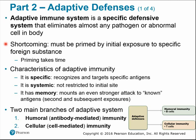A downside to the adaptive system is that it must be primed first by initial exposure to that specific foreign substance, and this priming process takes time. Key characteristics of the adaptive immune system: it is specific, recognizing and targeting specific antigens; it is systemic, meaning body-wide and not restricted to the initial site like inflammation is; and it has memory, so after exposure to a pathogen we keep a record of it and can respond faster upon re-exposure.